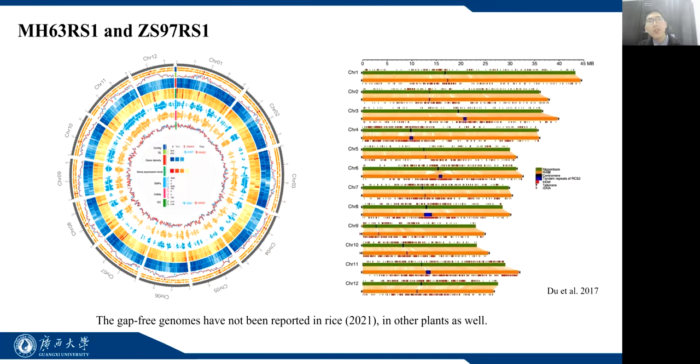Although we previously generated two reference genome assemblies, Zhenshan RS1 and Minghui RS1 in 2016, about 10% of each genome remained unassembled or unplaced.